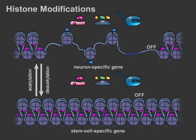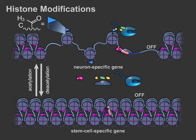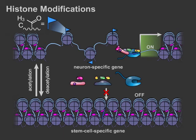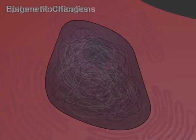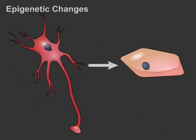A gene's physical accessibility may also be affected by interactions between DNA and histones, the spools around which DNA is coiled. Histone modification, such as acetylation, can cause histones to loosen or tighten DNA. Histone acetylation decreases the affinity of histones for DNA, allowing transcription factors to access and bind to a gene's promoter. DNA methylation and histone modifications lead to a specific pattern of gene expression in a differentiated cell.